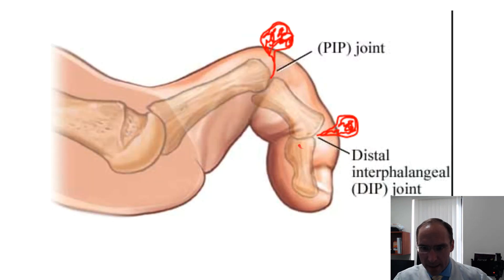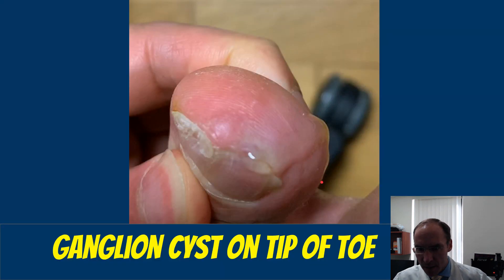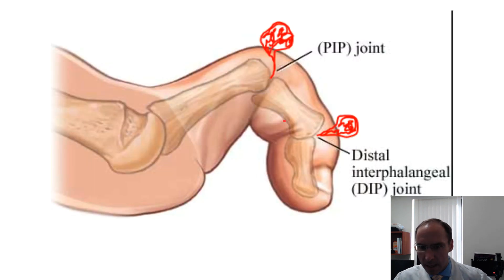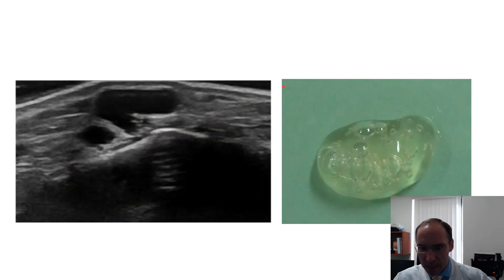Typically what happens with ganglion cysts, they come from either a tendon that runs either on the top or on the bottom, or they come from the joint space — either the distal joint or the proximal joint. In this type of area, it could be coming from this joint space or even the tendon underneath it, and it kind of balloons out this liquid in this area.